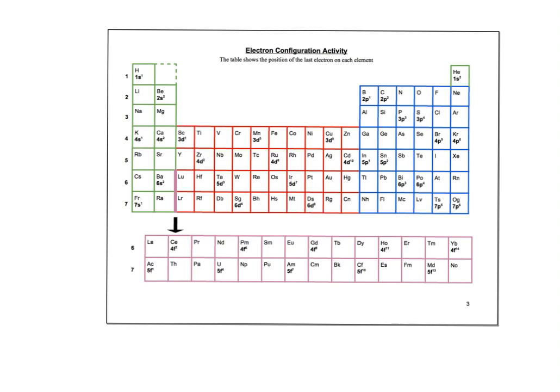Every element has its own electron configuration — its own directions to get to the house. It's like giving a friend directions from Denver to your house: the first part of the directions would be the same for neighbors — get on I-25 south, get off on Parker Road — but the last part is different for every house. So a lot of the directions are very similar for elements in the same area, but the last part of the code is unique to each element.